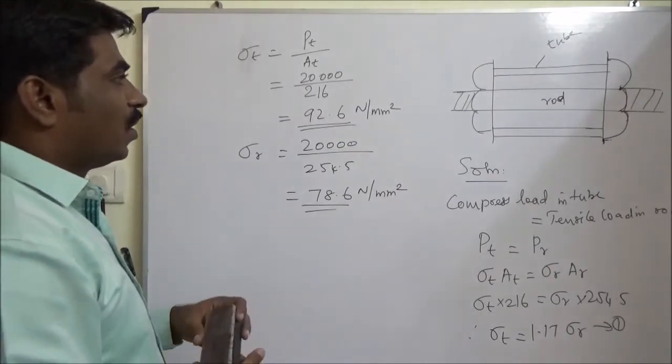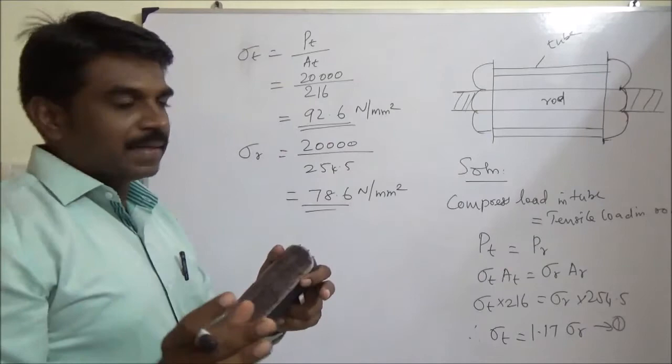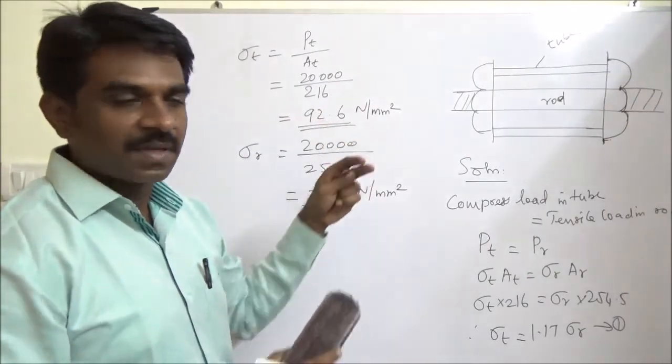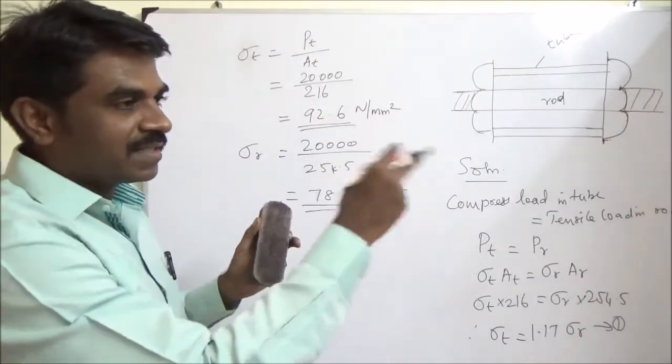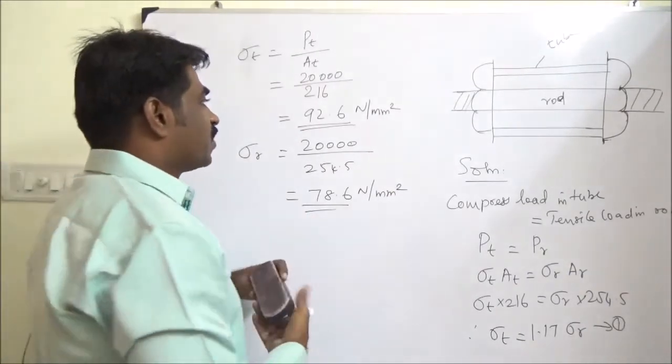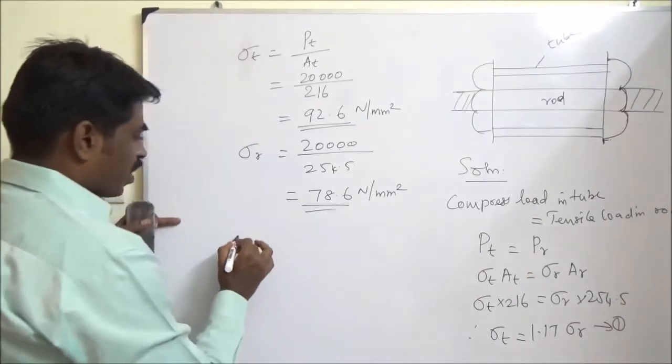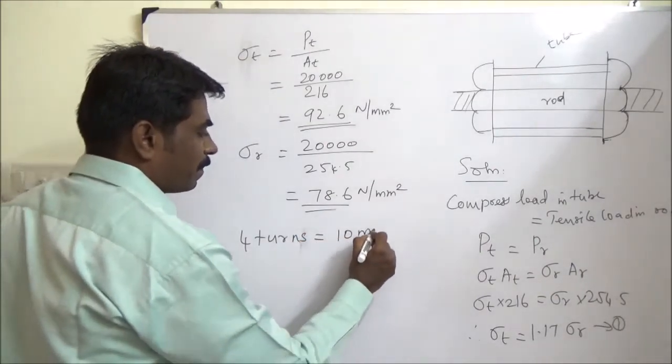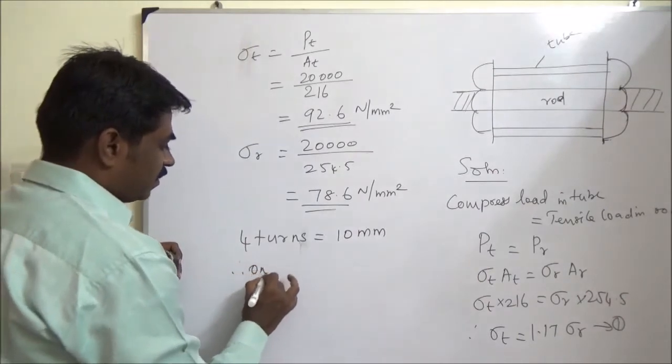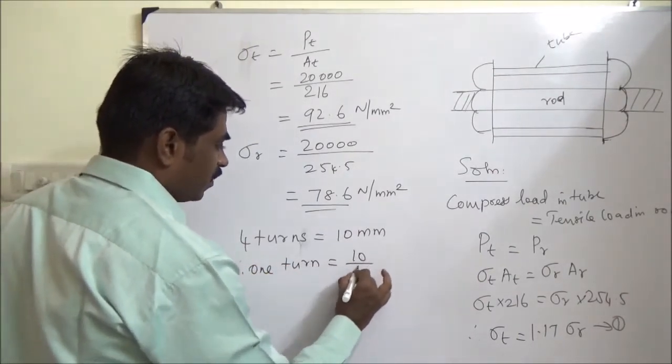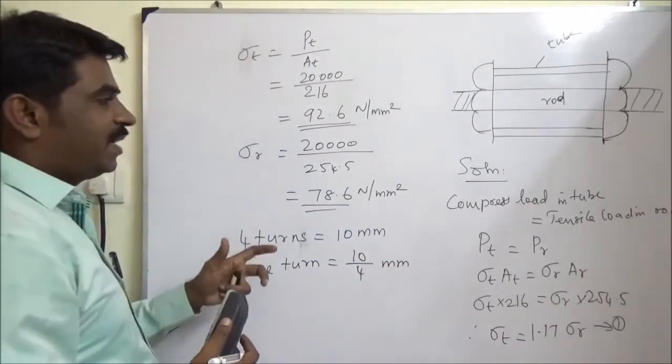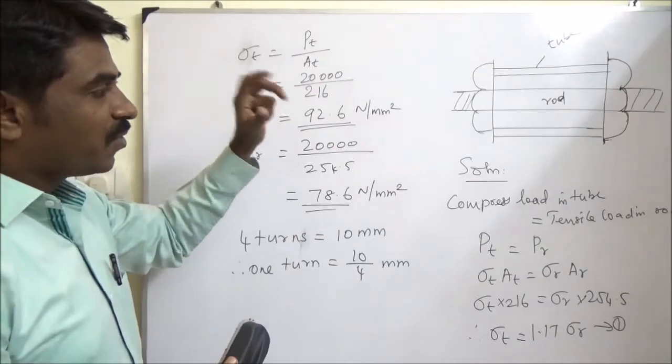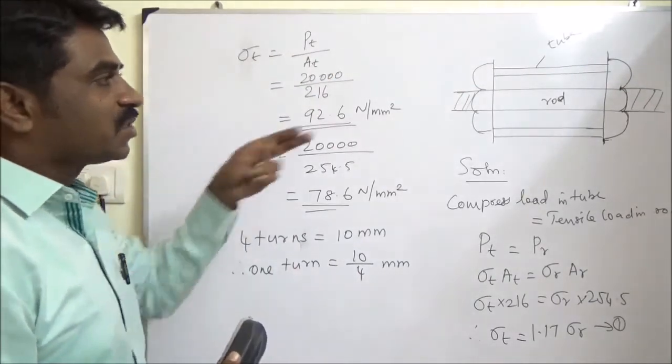The second part: when actually it is given that when the nut turns four times, it moves 10 mm. So four turns equal to 10 mm is what is given in the question. Therefore, one turn equals 10 by 4 mm. The stress induced in rod and tube because of one-fourth of a turn, that is what is asked.